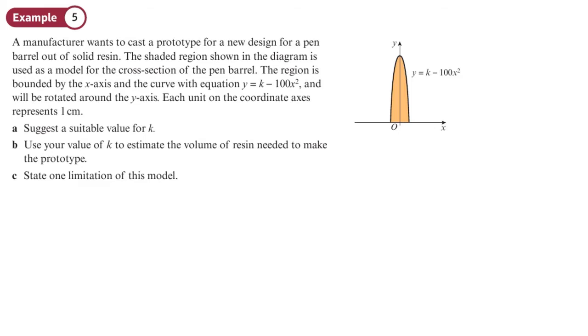A manufacturer wants to cast a prototype for a new design for a pen barrel, so that's the bit of the pen that holds the ink bit. The shaded region shown in the diagram is used for a model for the cross section of the barrel. So I can see that this is some sort of curve that's basically rotated around the y-axis, 360 degrees or 2π radians around the y-axis to create that volume. The region is bounded by the x-axis, and the curve with the equation y = k - 100x², and will be rotated around the y-axis. Each unit on a coordinate axis represents one centimeter.